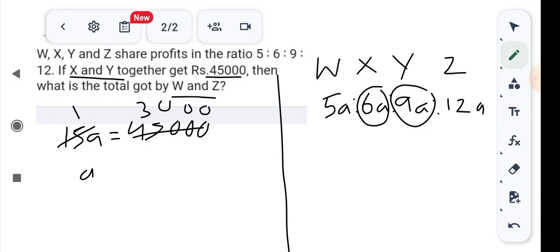So the value of a? 15a equals 45,000, so a equals 3,000. Okay, a equals 3,000. Now the question asks: what is the total got by W and Z? W is 5 and Z is 12. 12 and 5 is 17.